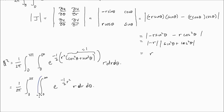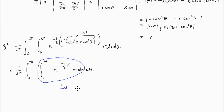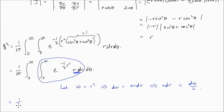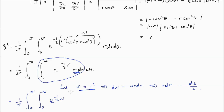Now let's evaluate the inner integral with respect to r. I'll use a substitution: let w equal r squared, so dw equals 2r dr, which implies r dr equals dw divided by 2. When r goes to 0, w goes to 0; when r goes to infinity, w goes to infinity. So the inner integral becomes the integral from 0 to infinity of e to the negative one-half w times dw over 2, and the integral of e to the negative one-half w is negative 2 e to the negative one-half w, evaluated from 0 to infinity.